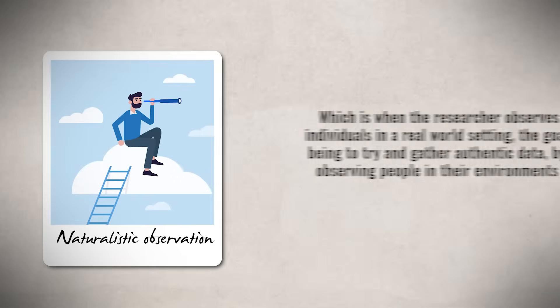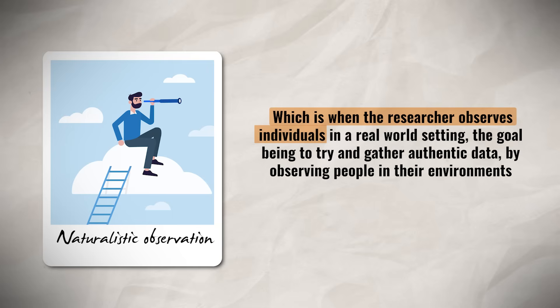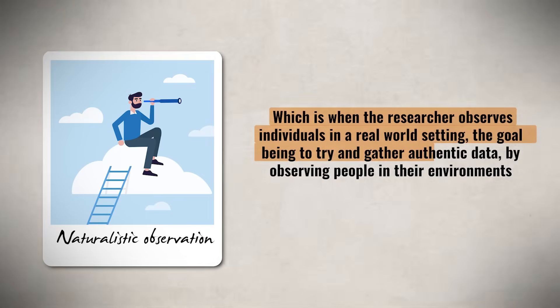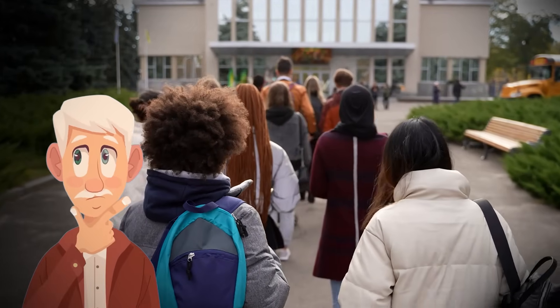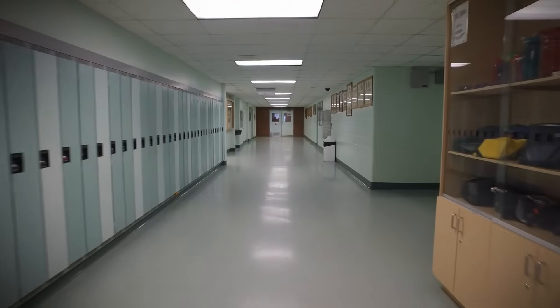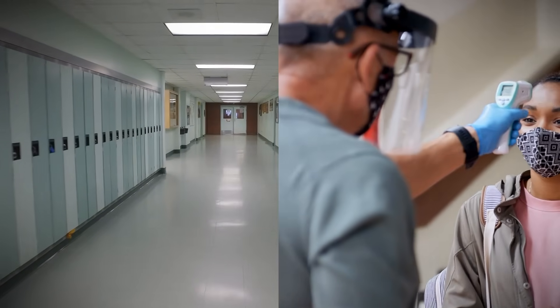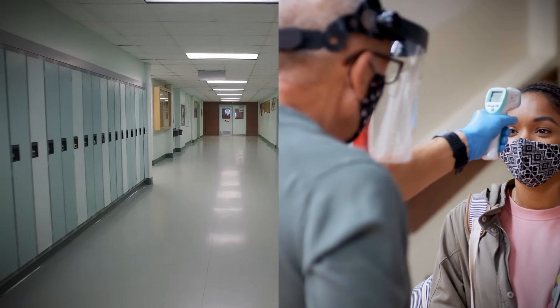Lastly, there is naturalistic observation, which is when researchers observe individuals in a real-world setting. The goal is to gather authentic data by observing people in their environments. One issue is that the observer may not have proper context for what they are observing. For example, observing a school in 2021 would give a skewed idea of how it operates, because many schools made temporary changes to the school day and building layout due to COVID-19.